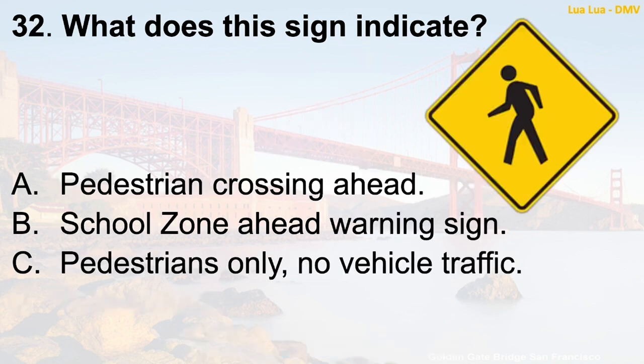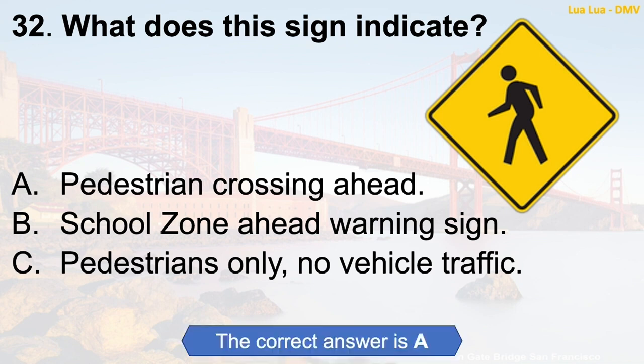Question 32: What does this sign indicate? A. Pedestrian crossing ahead. B. School zone ahead warning sign. C. Pedestrians only, no vehicle traffic. The correct answer is A: Pedestrian crossing ahead.